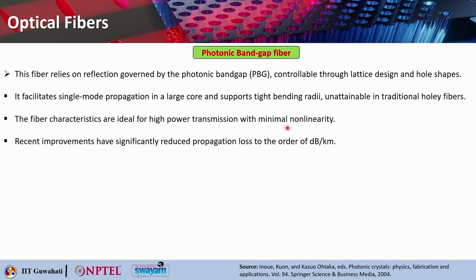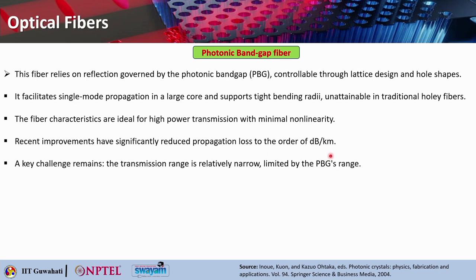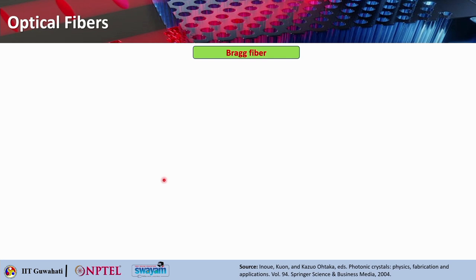The photonic band gap fiber characteristics are ideal for high power transmission with minimal non-linearity because the core is made of air. Recent improvements have significantly reduced the propagation loss to the order of several dB per kilometer. A key challenge remains that the transmission range is relatively narrow because it is limited by the photonic band gap range — that is a drawback of this photonic band gap fiber.